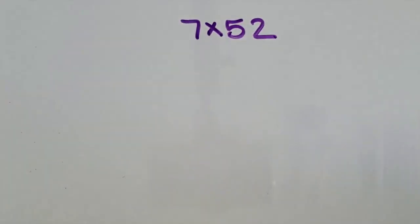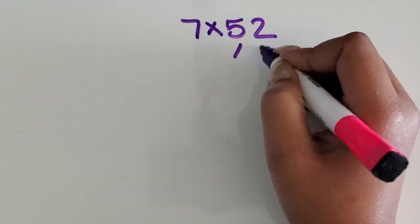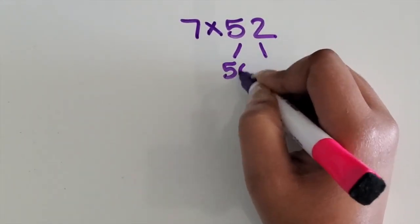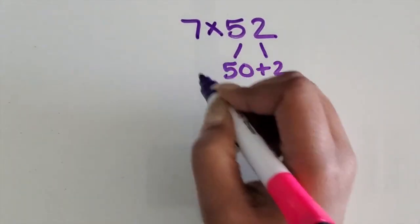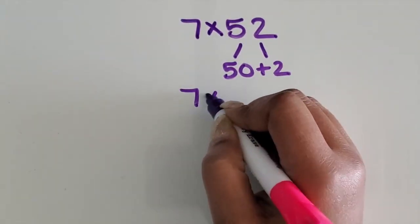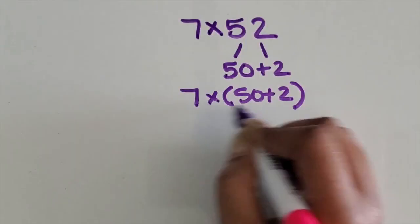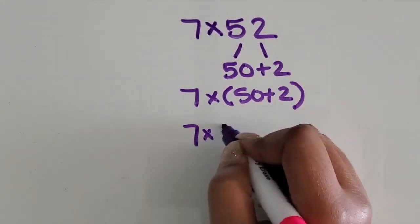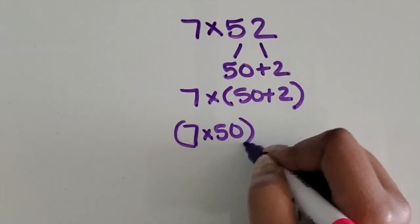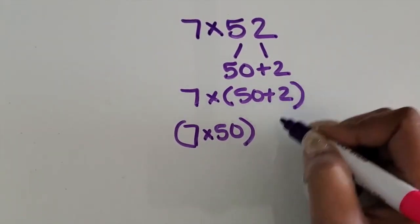Again, I want the students to break apart the 52 into 50 and 2, so we're doing 7 times 50 plus 2. We're going to spread that out, or distribute it out, so 7 times 50 and then 7 times 2.